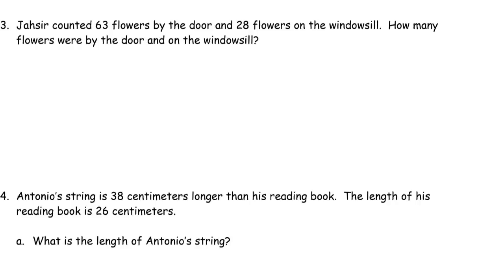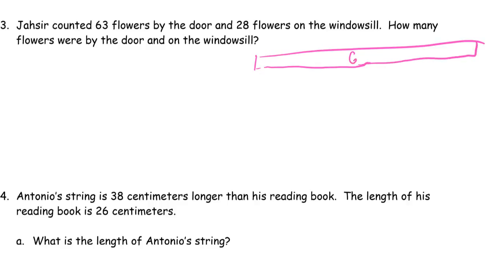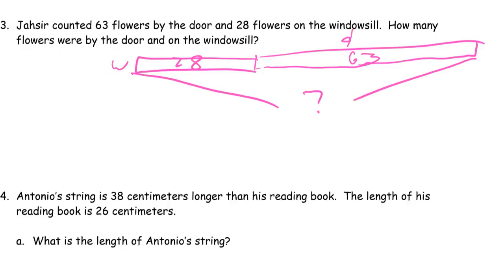Jasmine counted sixty-three flowers by the door and twenty-eight flowers on the windowsill. How many flowers were by the door and on the windowsill? We're going to draw a quick tape diagram. Here's the 63 by the door and the windowsill 28, and we have to find out how much is it for the two of them added together: twenty-eight and sixty-three.